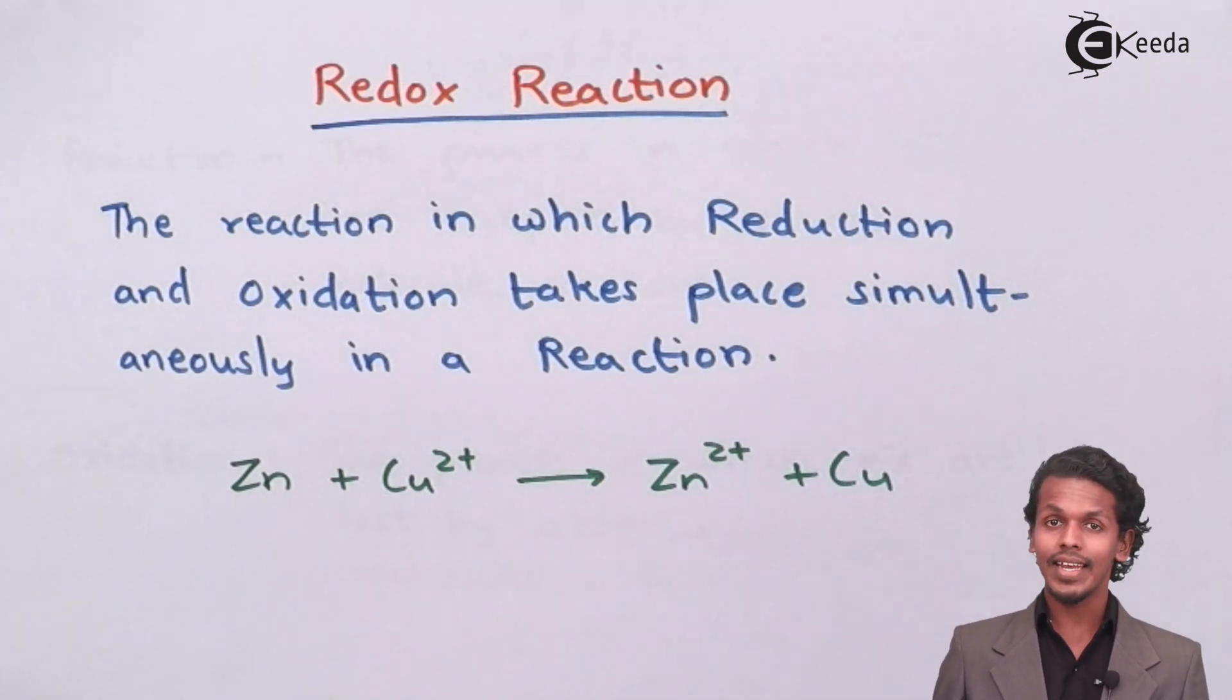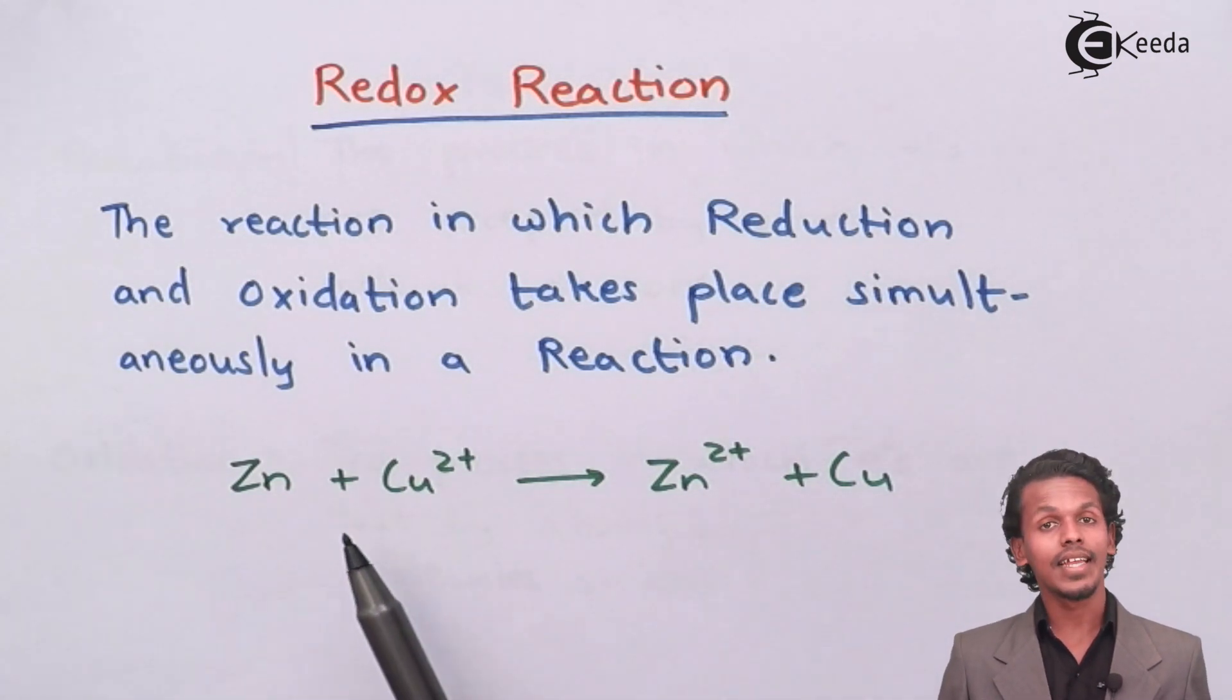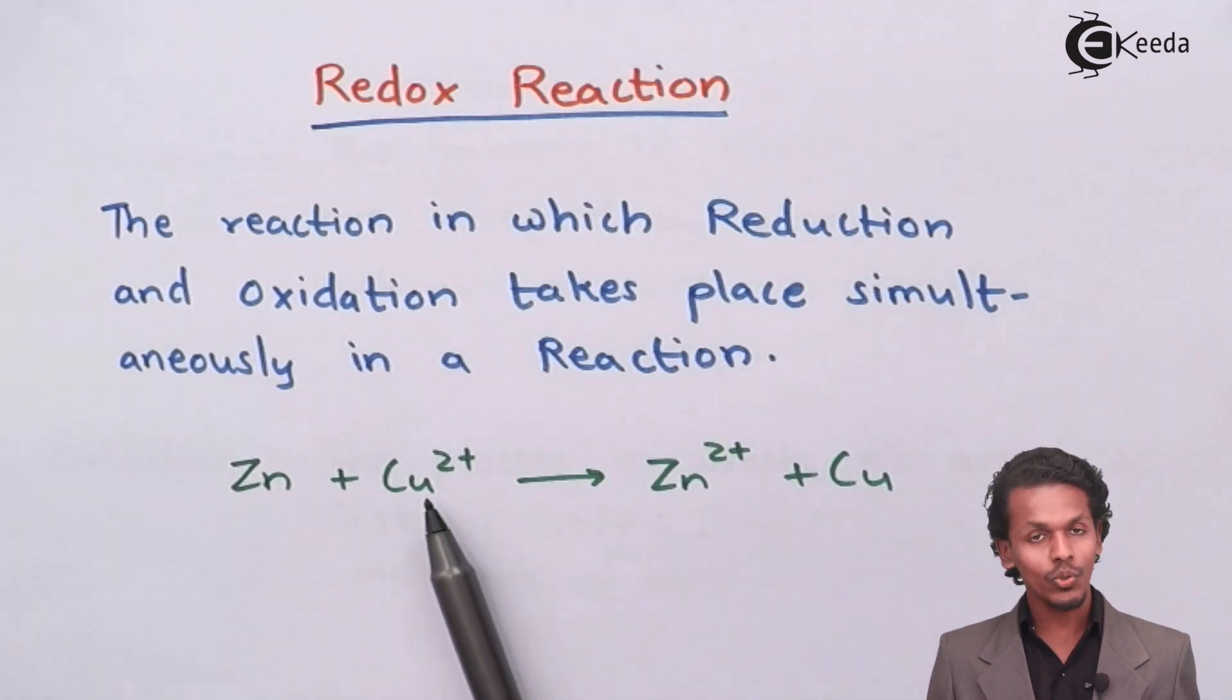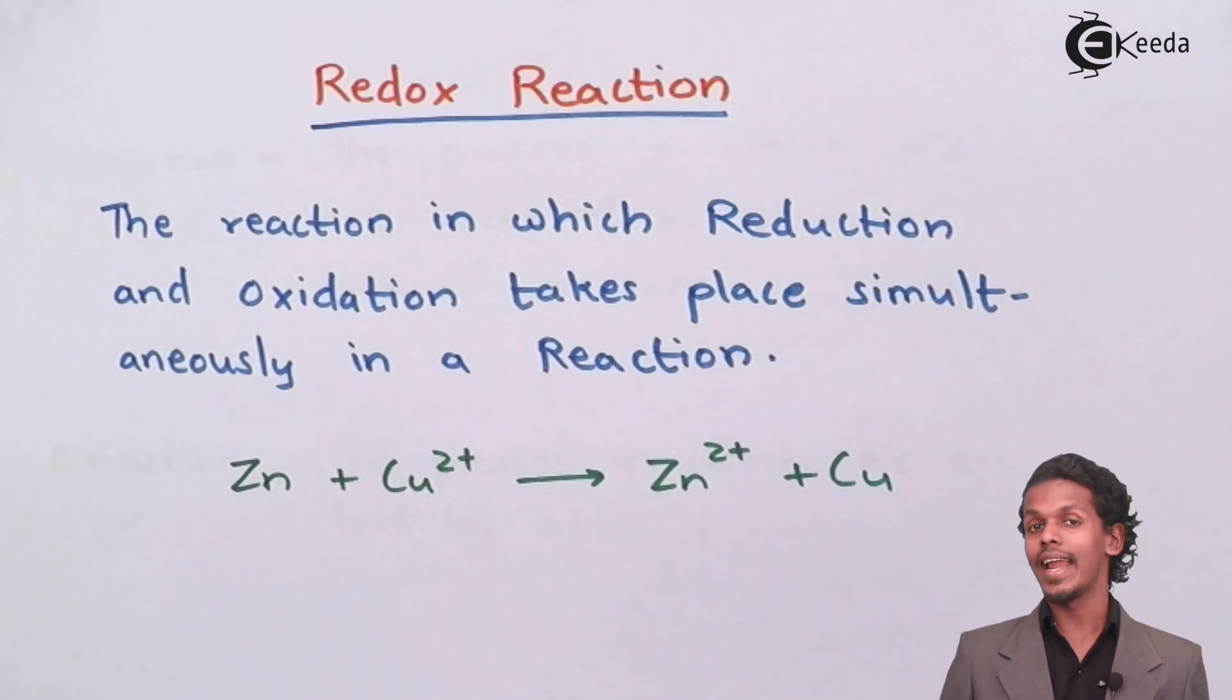For instance, I have given an example in which zinc (Zn) reacts with copper ion (Cu2+) to give zinc ion (Zn2+) and copper in elemental form.